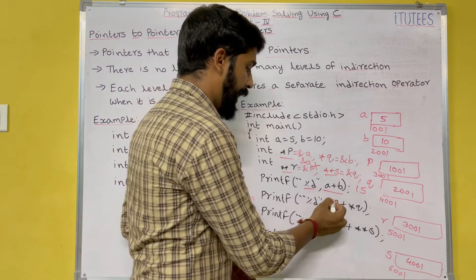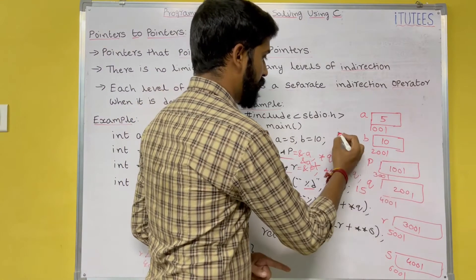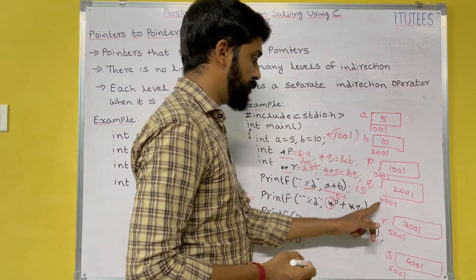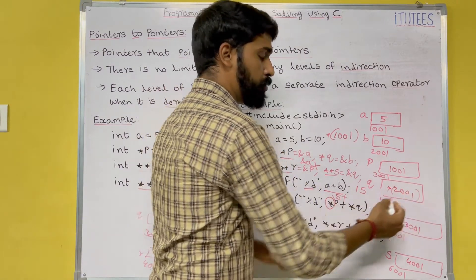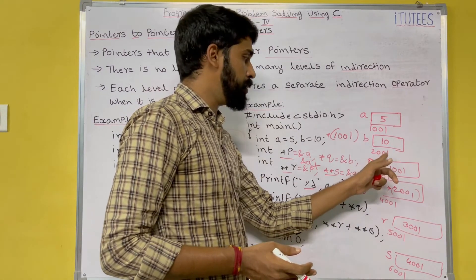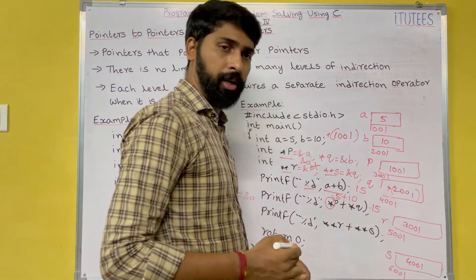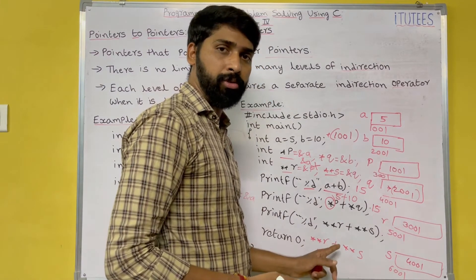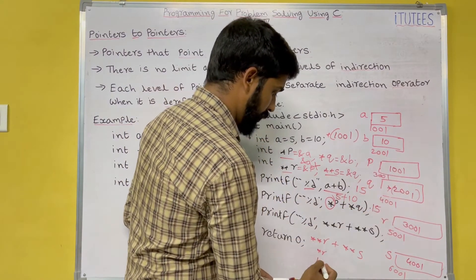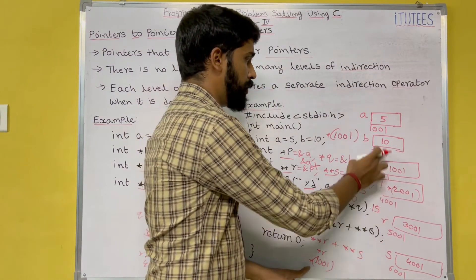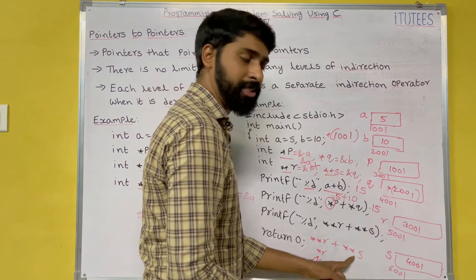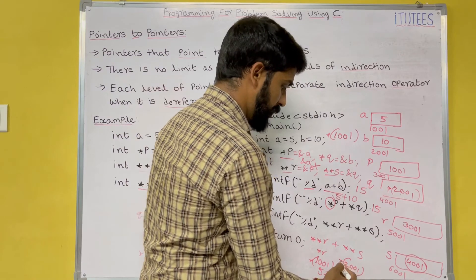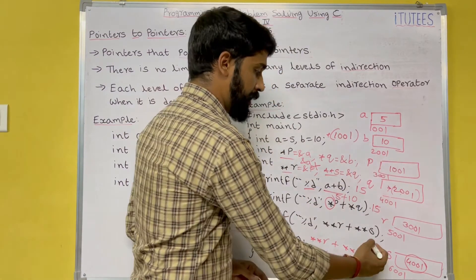Using `*p + *q`: the dereference operator on `p` gives address 1001, dereferencing 1001 gives 5; dereferencing `q` gives address 2001, dereferencing 2001 gives 10 — so 5 plus 10 prints 15. Using `**r + **s`: `*r` dereferences to address 3001, then `*` of that goes to 1001 giving 5; `*s` dereferences to 4001, then `*` of that goes to 2001 giving 10 — so 5 plus 10 prints 15.